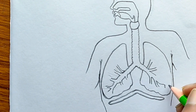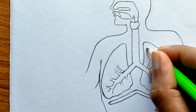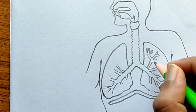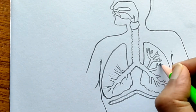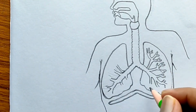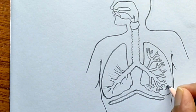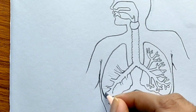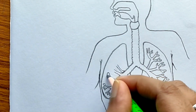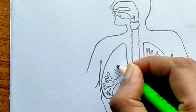From each bronchus, bronchioles branch off, and bronchioles end in structures called alveoli. The alveoli are structures that increase the surface area of the lungs, which helps in gas exchange. I am drawing the bronchioles and alveoli — alveoli are like balloon-like bags that help in filling with air.